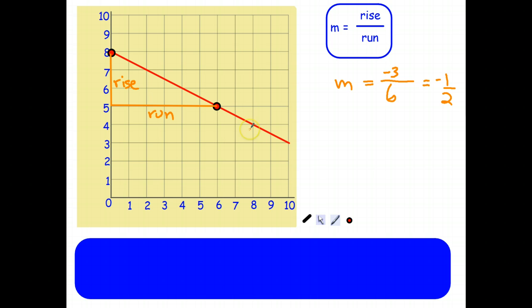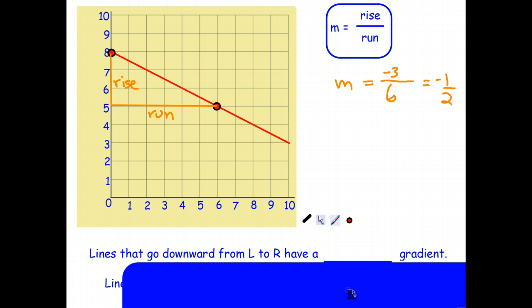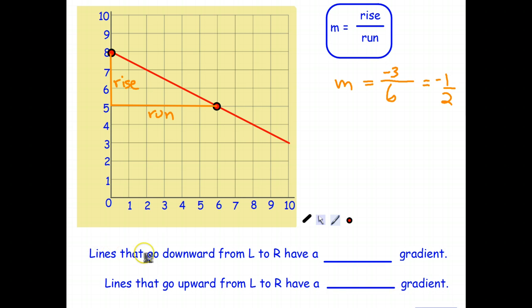Again, we could have chosen two other points on the line, any two points, and would have found the same gradient. So this particular gradient, most important thing to learn from this slide is when the graph goes down as you go from left to right, the gradient is negative. So lines that go downward from left to right have a negative gradient, and lines that go upward from left to right, like on the previous slide, have a positive gradient. Let's have a look at the next slide.